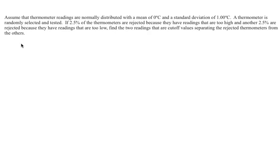In this case, we want to find the x values. The x values are what we measure, which is temperature. We need to find two temperatures - one for the 2.5% that are too high and one for the 2.5% that are too low.